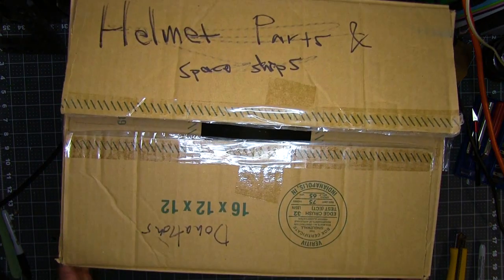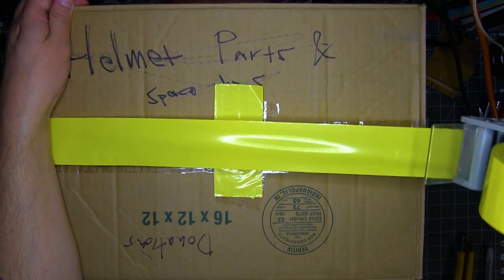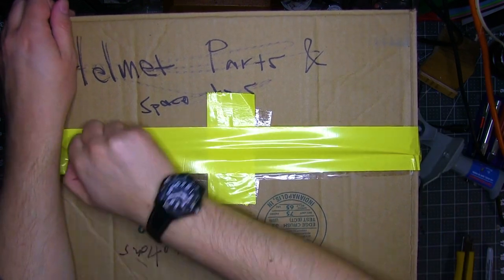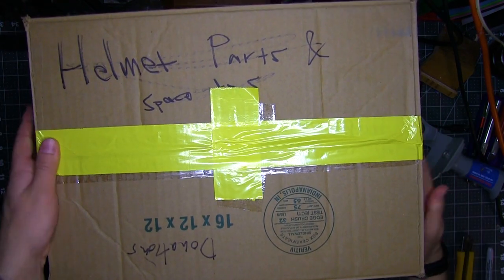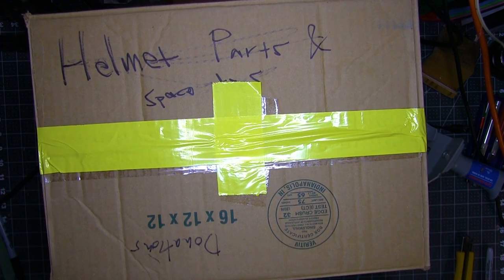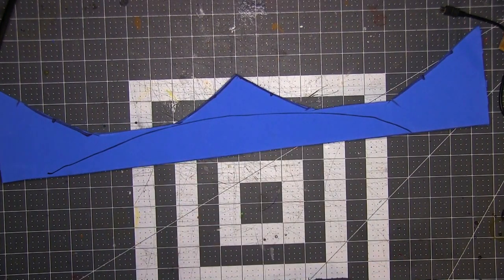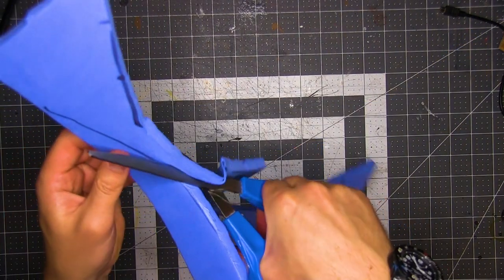First, I started with the cardboard box. This is going to be the basic internal framework, just for stability. Now, admittedly, this is not a very durable structure. And to that end, a lot of this is going to be cut away when I'm done. But for right now, I need it to hold the foam in place while I'm working. Kind of like a reverse one, two, three block. So first, I taped it closed.